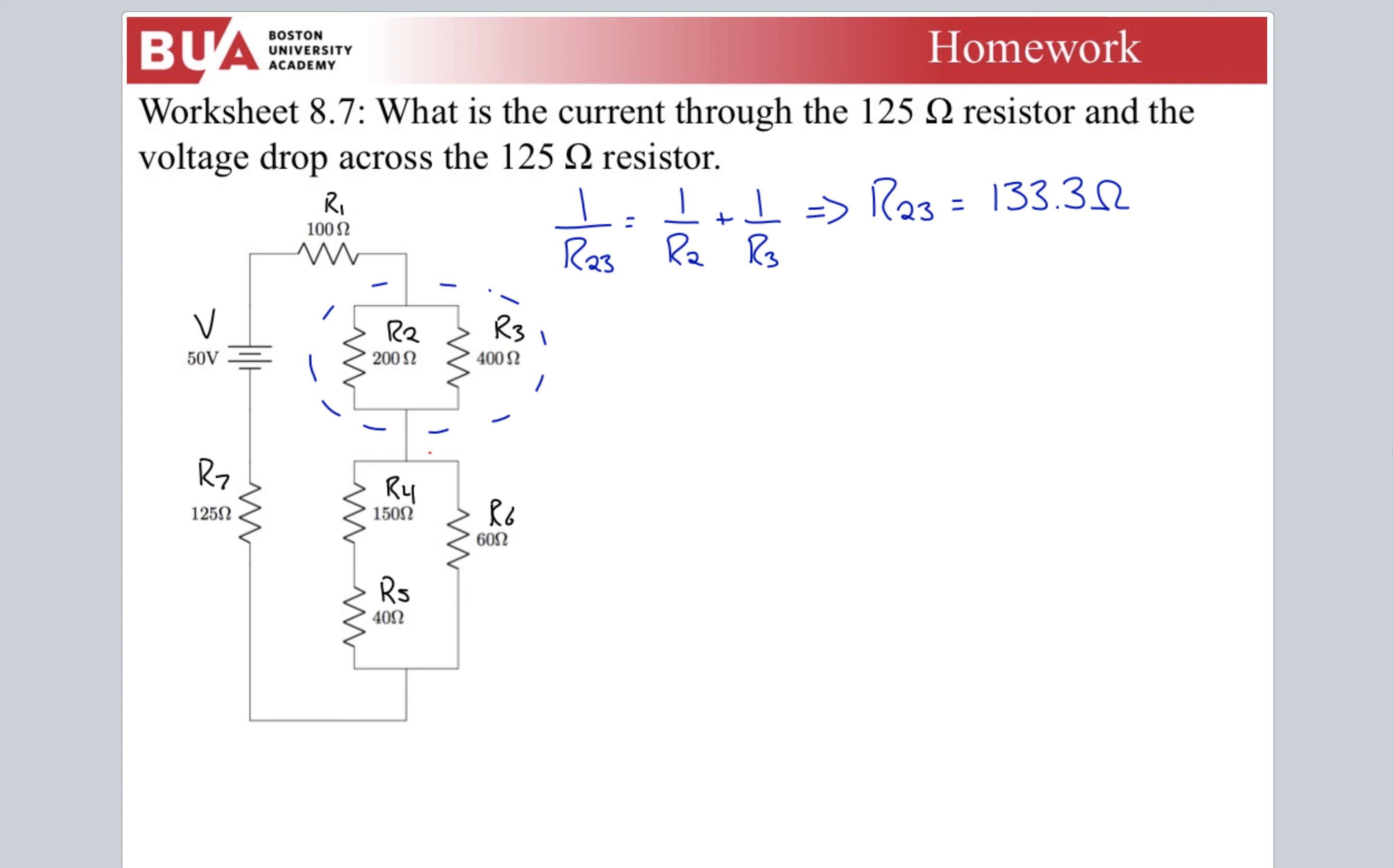One over what I'm going to call R23 is one over R2 plus one over R3. That gives me when I solve for R23, 133.3 ohms. Add the fractions, flip it. Then I need to do R456. First step here, sub step, because I need to combine 4 and 5.